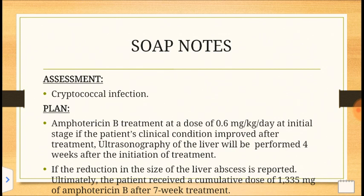The treatment plan was Amphotericin B at a dose of 0.6 mg per kg per day initially. If her condition improved, liver ultrasonography would be performed 4 weeks after initiation of treatment. If a reduction in size of the liver abscess was reported, the patient ultimately received a cumulative dose of 1335 mg of Amphotericin B after 7 weeks of treatment.